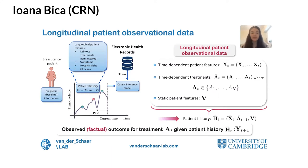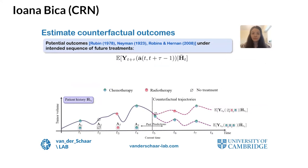For each patient, we observe static features V such as diagnostic information, and each time step we observe time-dependent features X and time-dependent treatments A, where each patient can be assigned one of k possible treatments. All of these form the patient history H, and the observational data also includes the factual outcome Y. We work in the Neyman-Rubin potential outcomes framework extended by Robbins and Hernan to account for time-varying treatments. Our aim is to estimate all potential outcomes, both factual and counterfactual, under an intended sequence of future treatments conditioned on the patient history. To identify these from observational data, we make the sequential overlap assumption and the sequential strong ignorability assumption.